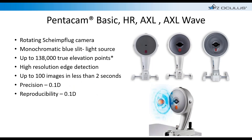The Pentacam has four different models: the basic model, the HR model, the AXL model, and the AXL Wave model. The things we're going to discuss tonight can be done with some models only on the AXL Wave, but many apply to all models. They're all based on the same technology — a rotating Scheimpflug camera using monochromatic blue light with 138,000 true elevation points, making it a very high-resolution device. Images can be captured in one to two seconds, and the precision and reproducibility are quite remarkable.